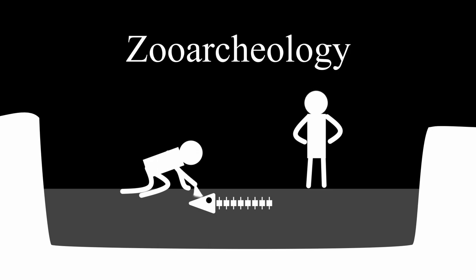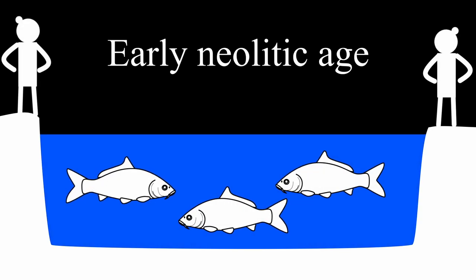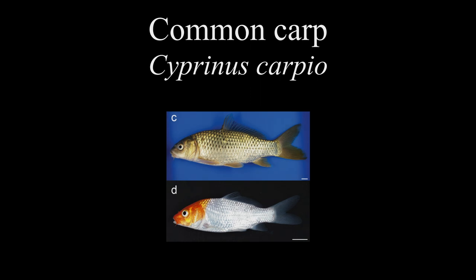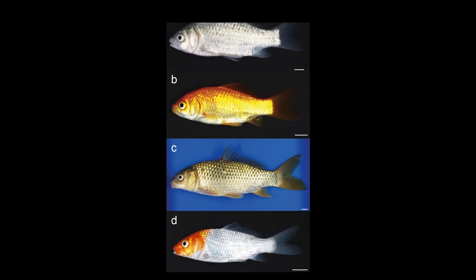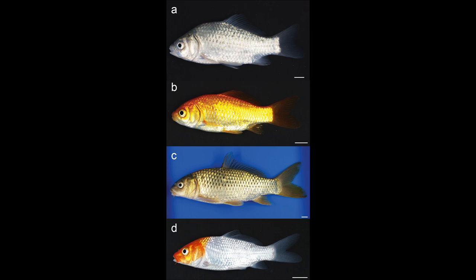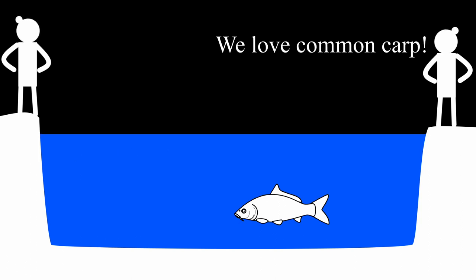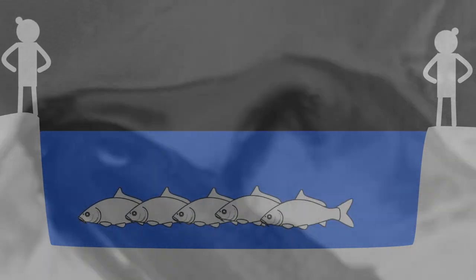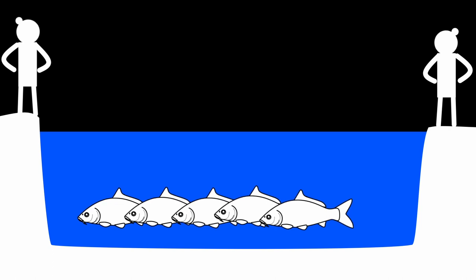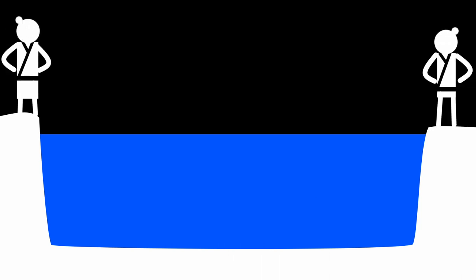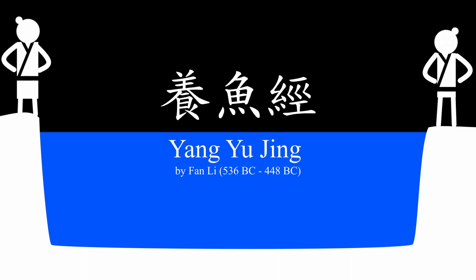A recent zooarchaeological study found that early Neolithic people cultured fish species. They especially preferred common carp, Cyprinus carpio. The common carp is known as one of the closely related fish to the Carassius species, so Neolithic people could easily access the Carassius species, but they tended to consume common carp as food. This means that the Neolithic people culturally preferred common carp and finally established a functional aquaculture system for common carp. It is also known that an important script about common carp aquaculture was written in ancient China.